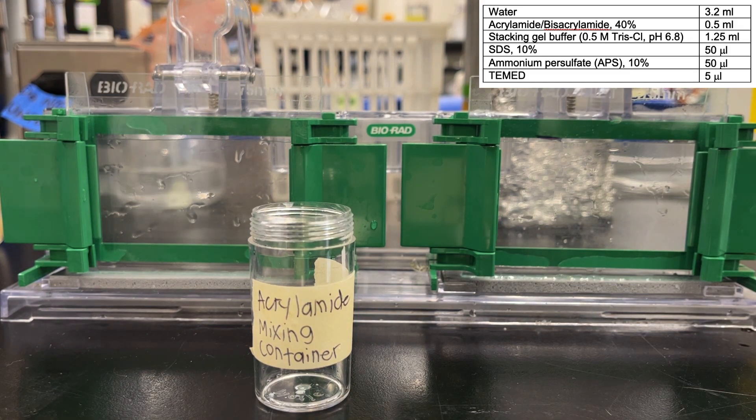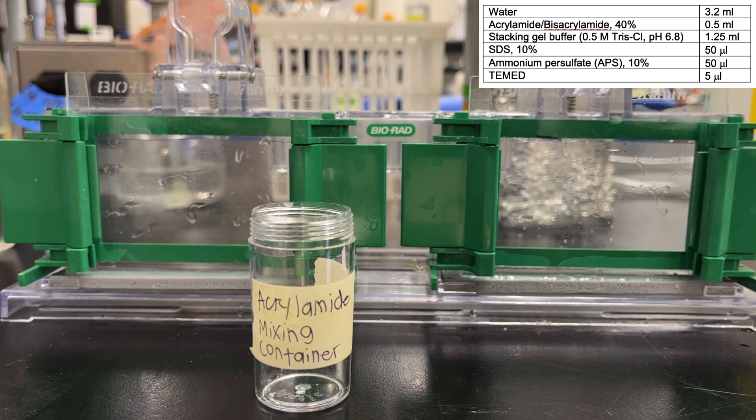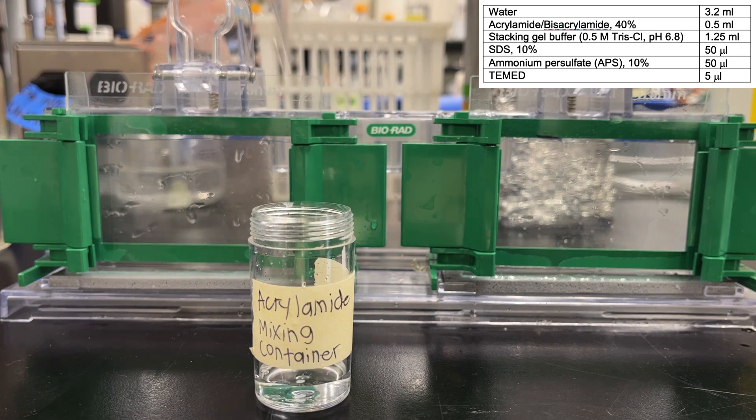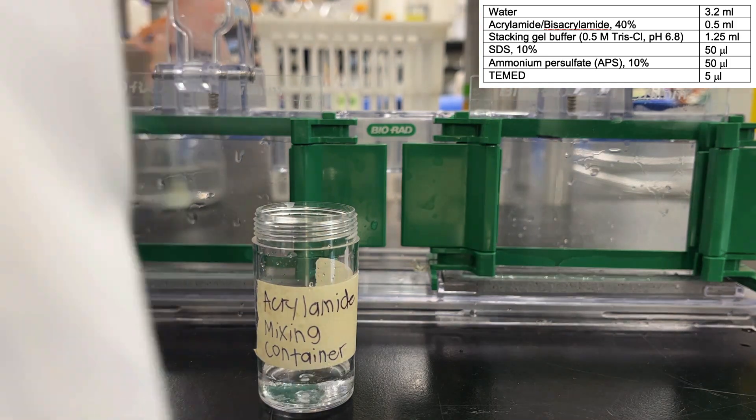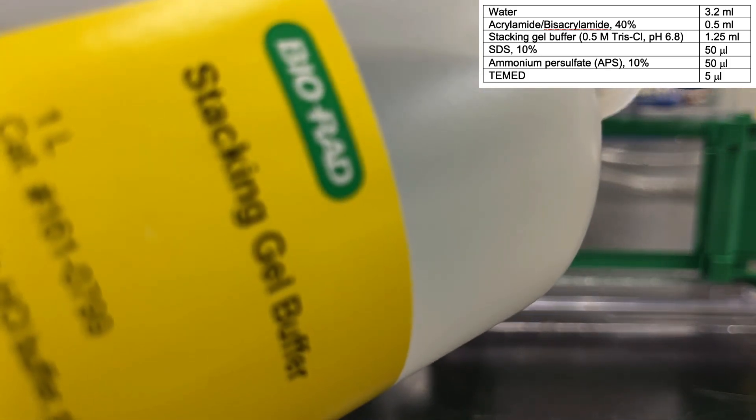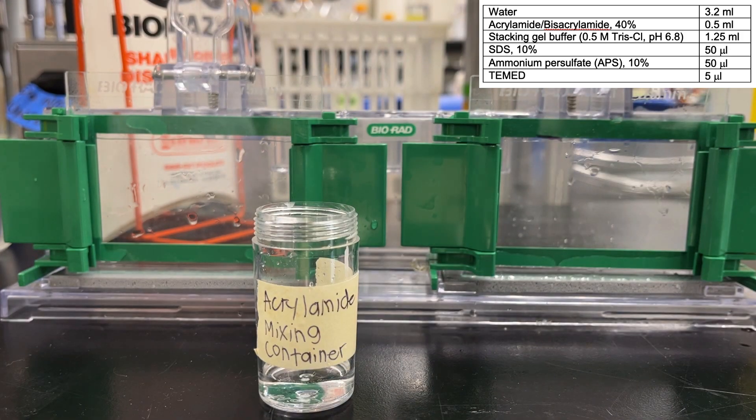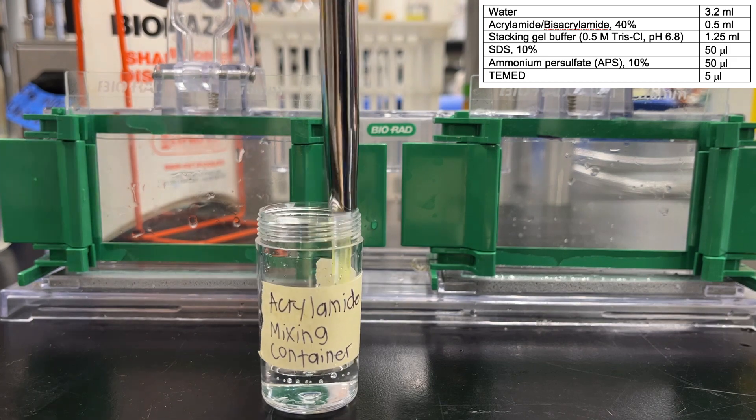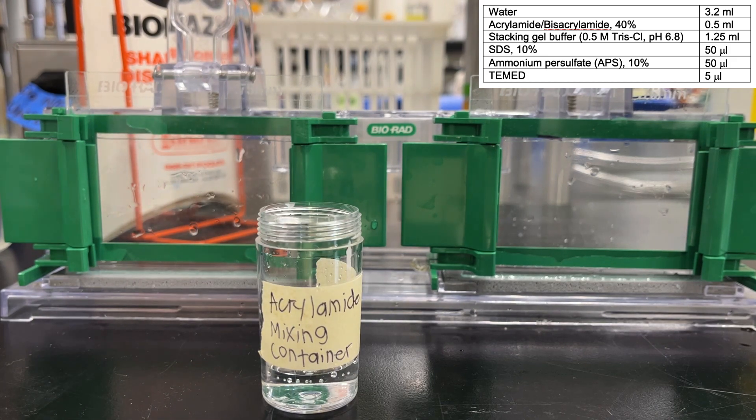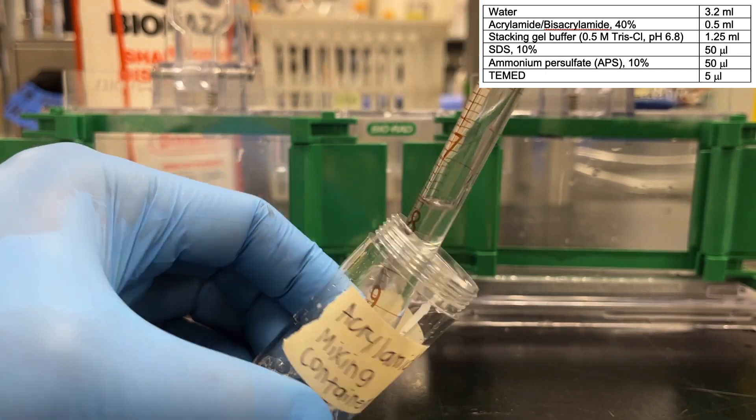Let's get our acrylamide mixing container that I have cleaned, ready to pour my stacking gel. The process is pretty much the same. I'm going to take my glass pipette, add my water first. Then I'm going to take my acrylamide-bisacrylamide mixture, use a P1000, pipette 0.5 mils of my stacking gel buffer. Make sure it's the stacking gel buffer; if you mix the two buffers, you're going to run into problems. 1.25 mils divided by 2 is 625 microliters, twice. Add your SDS, and then as before, your APS and your TEMED last. TEMED is our polymerizing agent.